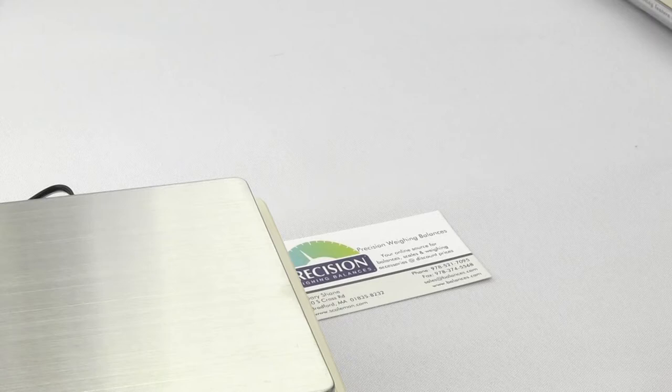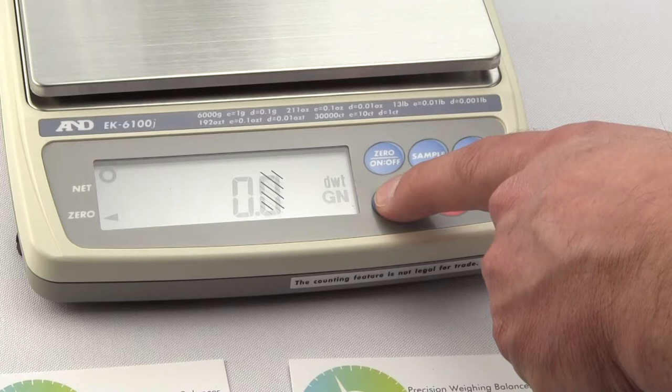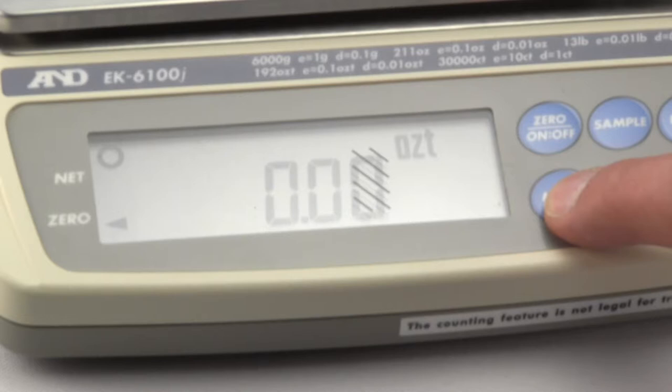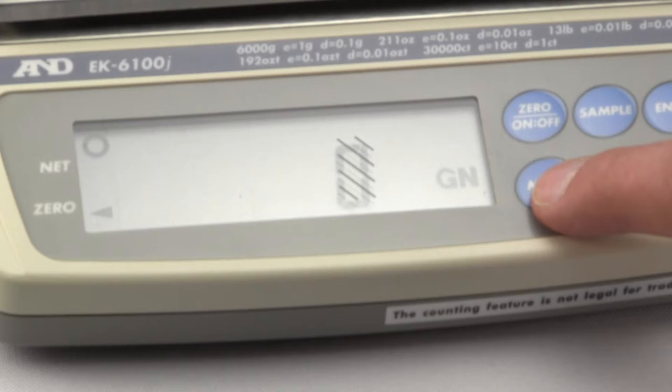So you have multiple weigh modes. So we have grams all together if we press the mode key once. This is piece count, percent weighing, ounces, pounds, troy ounces, carats, mummies, pennyweight, and grains. So you have multiple weighing functions with this scale.